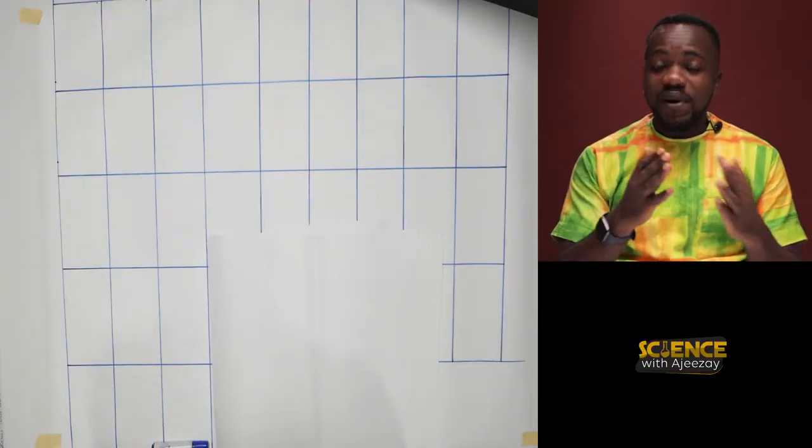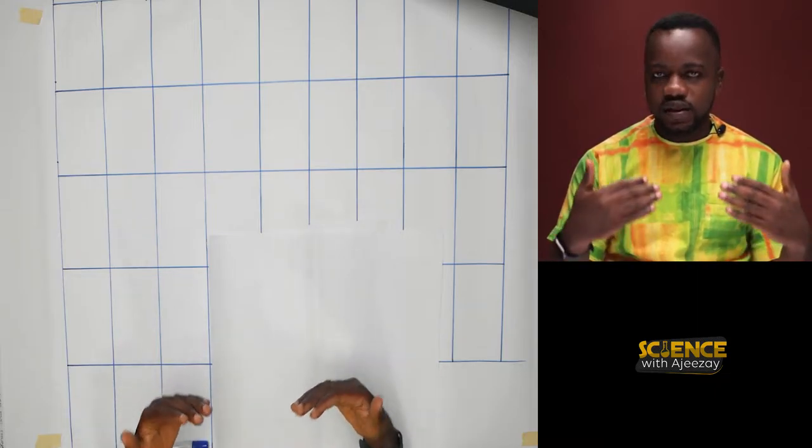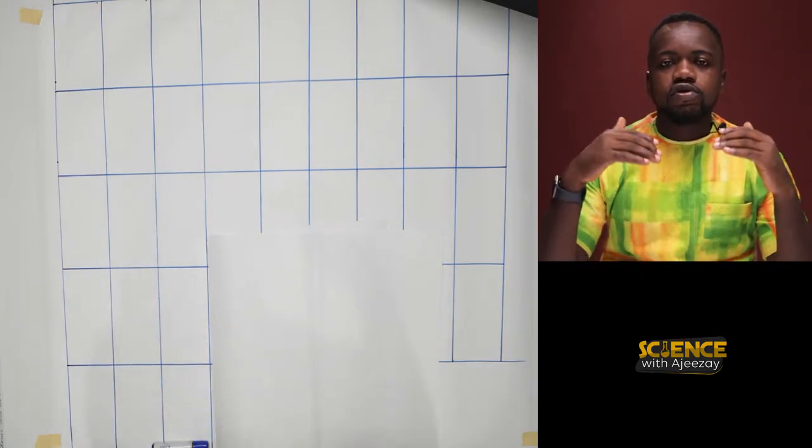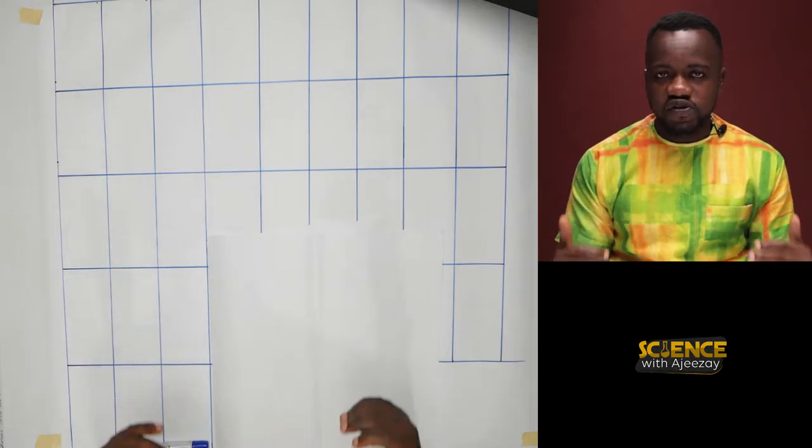Greetings, my cherished learners. Welcome to another episode of Science with Ajese. In this episode, we will learn about the periodic table. I believe it's not the first time, but I'm here for the foundation to make you understand the principles and concepts. By the end of this lesson, we will be able to explain the periodic table and write or draw the periodic table for the first 20 elements.